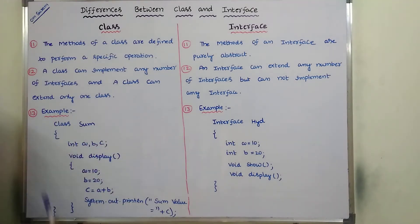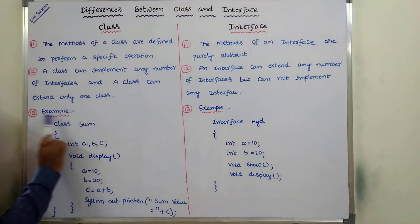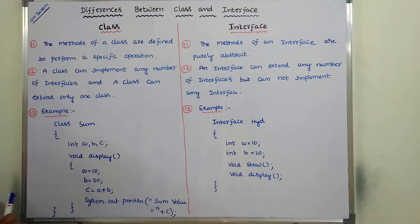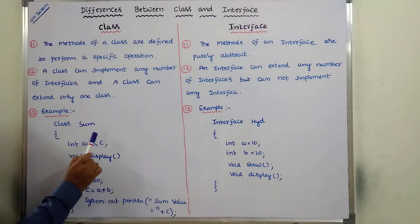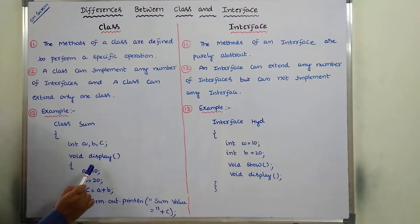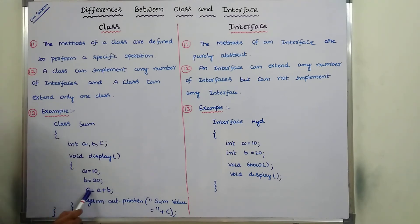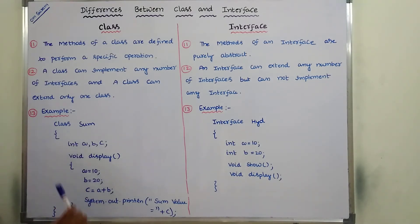Now see the example for a class: the keyword 'class' is used and the class name is 'Sum'. Inside the braces, variables int a, b, c are declared. This is a concrete method — void display — which contains a body of statements: a equals 10, b equals 20, c equals a plus b, which is 30. Then System.out.println prints the sum value equal to c, so 30 is printed.